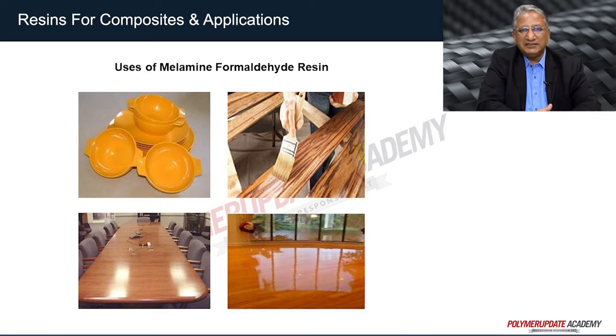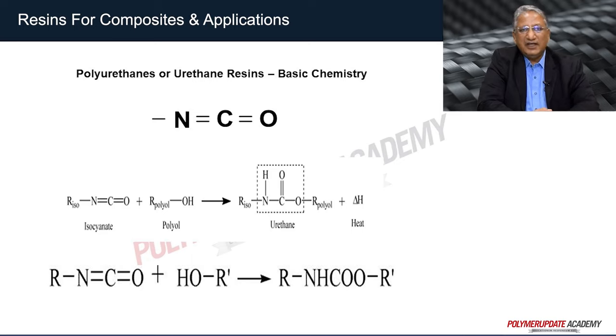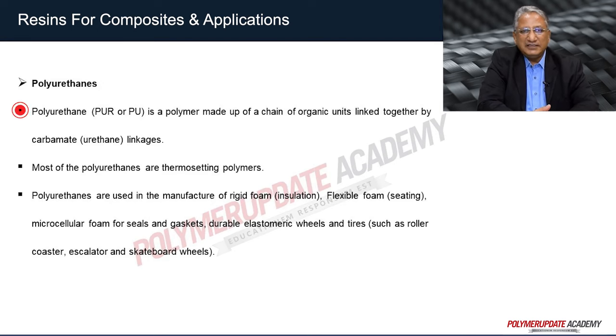Examples of melamine formaldehyde resin include crockeries and surface coating applications. The next composite resin is polyurethane or urethane resin. Polyurethane was first developed by Prof. Dr. Otto Bayer, who invented the diisocyanate polyaddition process, which is the base pattern for the polyurethane industry. Polyurethanes are formed by reacting a polyol (an alcohol with more than two reactive hydroxyl groups per molecule) with a diisocyanate or polymeric isocyanate in the presence of suitable catalysts and additives, giving an exothermic reaction. Aromatic or aliphatic isocyanate reacts with aromatic or aliphatic polyol to form a urethane linkage.